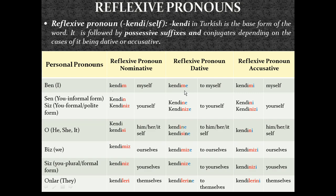When the reflexive pronoun kendi is in the dative case, it will take the dative suffix. Remember from the previous slides, dative case is used when there is a movement or orientation towards the object of the sentence — which is kendi in this case — so it translates as 'to myself'. Remember, dative suffixes 'a/e' mostly correspond to the prepositions 'to', 'at', or 'in' in English, but that is not a strict rule. When the reflexive pronoun is in the accusative case, it takes the accusative suffix after the possessive suffix: kendimi.